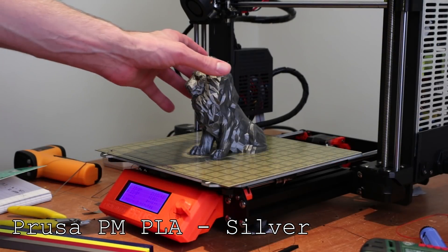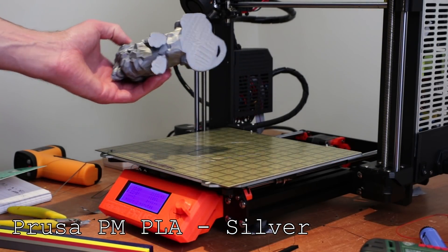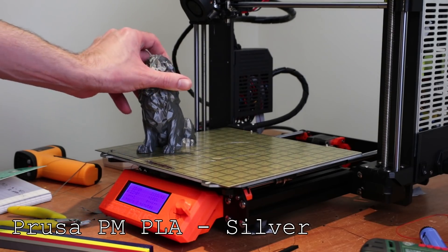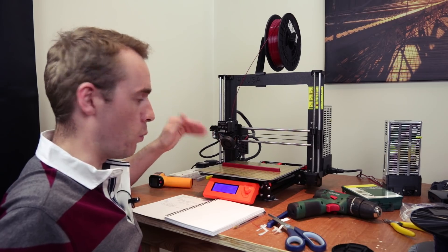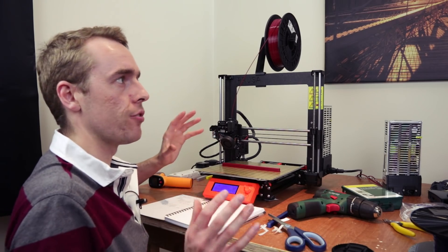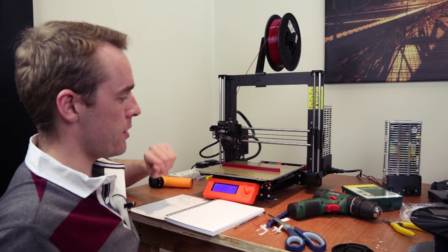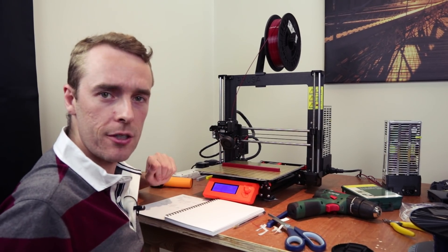PETG was also successful. The first layer went down fine. It stayed stuck for the duration of the print and released easily once cooled. So this right here is the PETG warp test. Now PETG doesn't generally warp that much, but it's done a pretty good job of holding it down for the duration of the print as you can see.